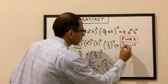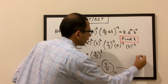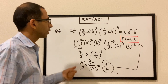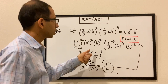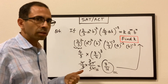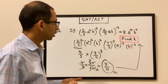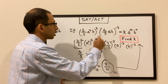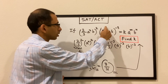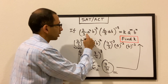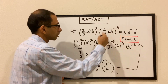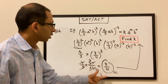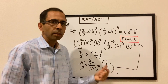That is the value of k. To reiterate: we focused only on the constant terms, computed each constant factor, and combined them to get k = 3/16.